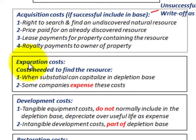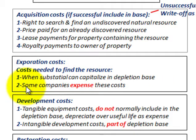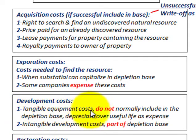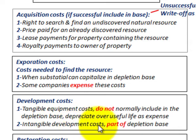Exploration costs are the costs needed to find the resource. When substantial, you can capitalize them in the depletion base; some companies just expense these costs. For development costs, we have both tangible and intangible. Tangible equipment costs are not normally included in the depletion base — you just depreciate them over the useful life and expense them. Intangible development costs are quite often part of the depletion base.